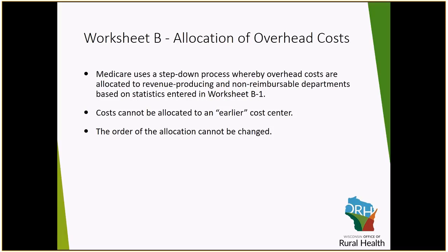Another cost center that is oftentimes fragmented is admin and general. Fragmenting that into cost centers of communications, data processing, and business offices oftentimes may be favorable for the organization to utilize a different statistic to allocate those costs on a more reasonable method to the specific revenue producing departments that those areas service.